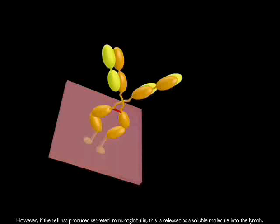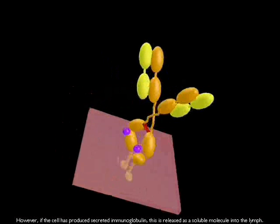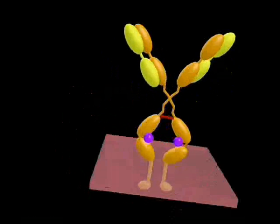However, if the cell has produced secreted immunoglobulin, this is released as a soluble molecule into the lymph.